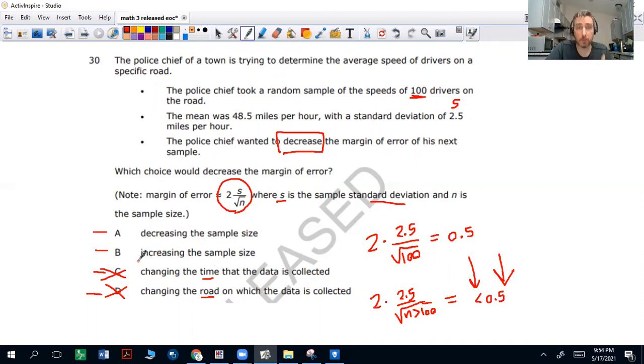So we want to increase the sample size. We want to increase N to decrease the margin of error. Bigger sample size, less error. It's going to be B.